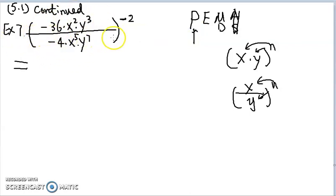In the parenthesis, it's division. We're going to follow the division rule. We divide these two numbers, negative 36 divided by negative 4, positive 9.